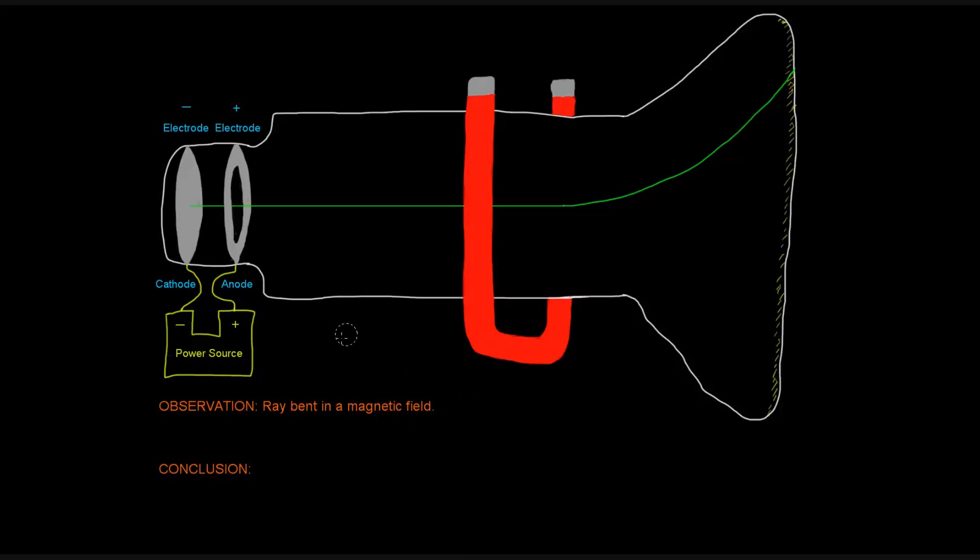So his conclusion was that because this ray bends in this magnetic field, that this ray must contain charged particles, right, because something that's charged will bend in the magnetic field.